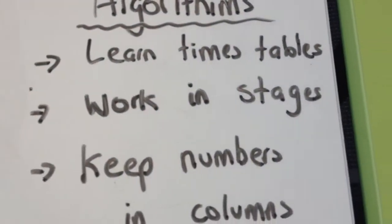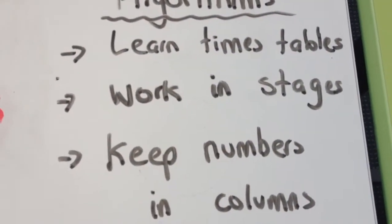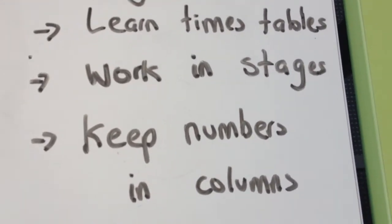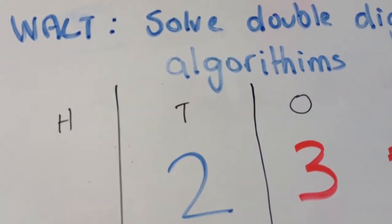You need to work in stages, so you have to kind of work as a process. And the most important thing is to keep your numbers in columns. And when I say that, I mean hundreds, tens, and ones.